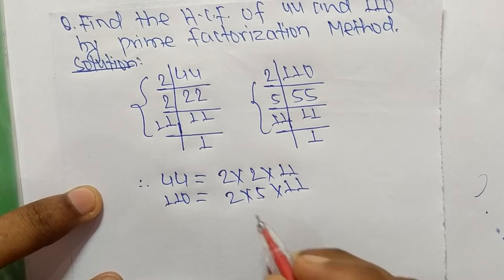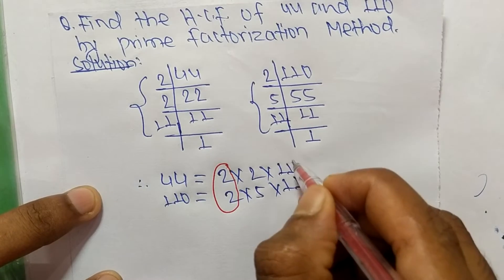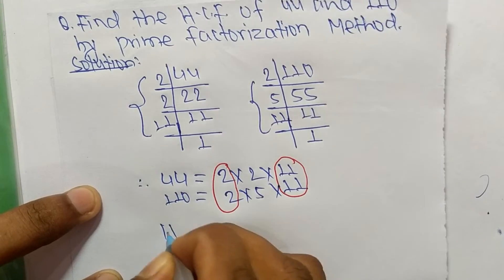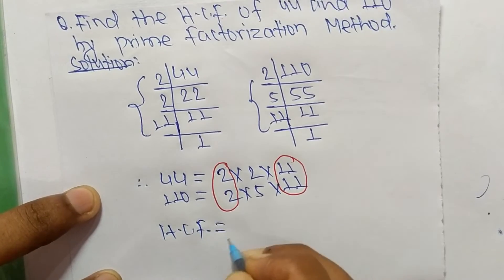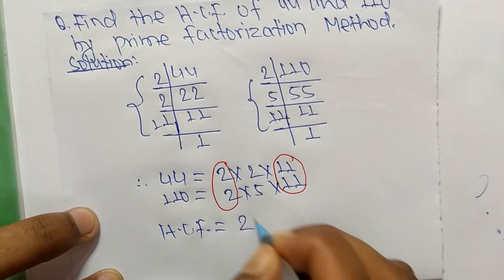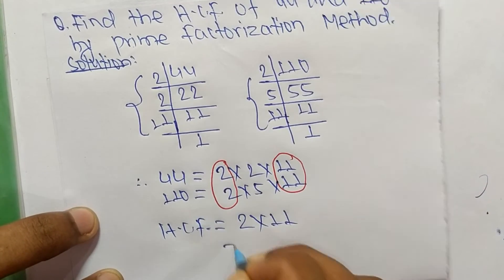in these prime factors. The common factors here are 2 and 11. So the HCF is equal to the product of common factors, which are 2 and 11.